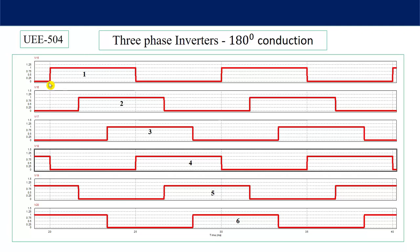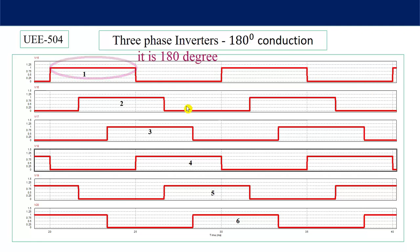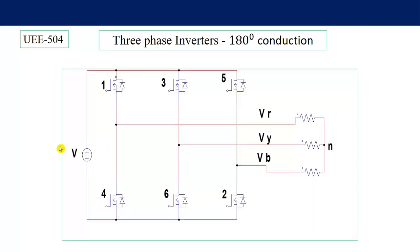Switch number 1 starts from zero, conducts for 180 degrees, then is off for 180 degrees, and like this it continues for all switches. One thing to observe is that switching pulse 1 and switching pulse 4 are complementary to each other — when switch 1 is on, switch 4 is off, and when switch 1 is off, switch 4 is on. This is to avoid short circuit between the two switches or between source and load.